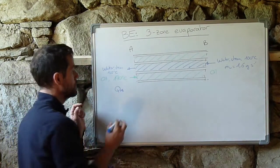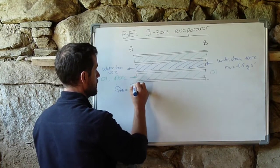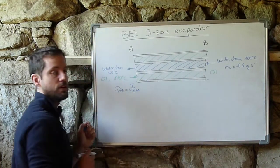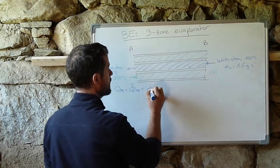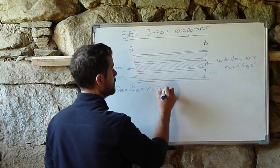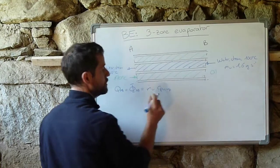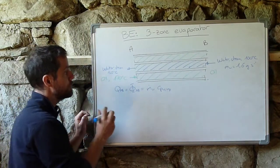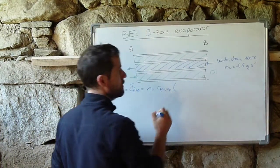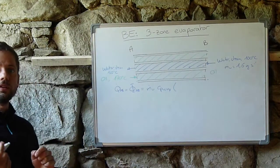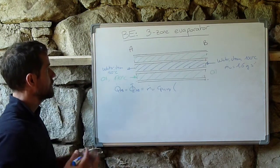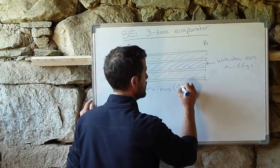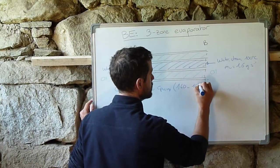So I use usually this letter, maybe you use this one for the heat flux, and you calculate with the mass flow rate of water times the Cp of water. Be careful, it should be the water in vapor form, multiplied by the difference of temperature of the water across this section, so that would be 140 minus 100 degrees.